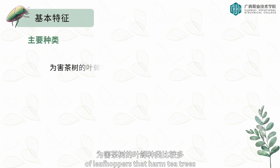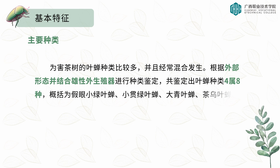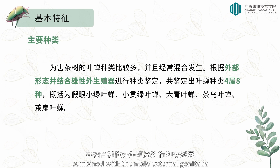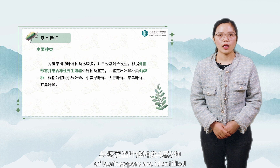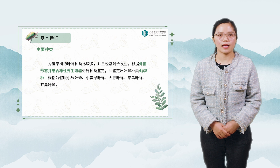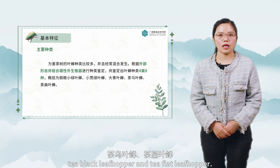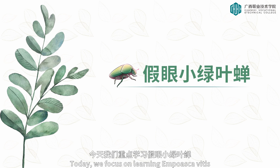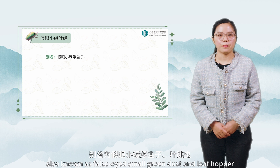There are many species of leafhoppers that harm tea trees, which often occur in mixed populations. Based on external morphology combined with male external genitalia, a total of four genera and eight species are identified, summarized as Empoasca vitis, small green leafhopper, big green leafhopper, tea black leafhopper, and tea flat leafhopper. Today we focus on learning about Empoasca vitis.